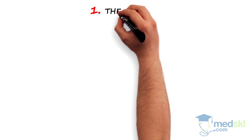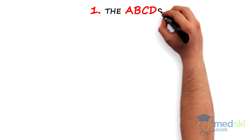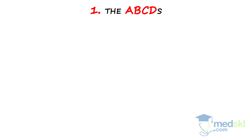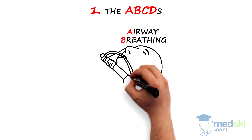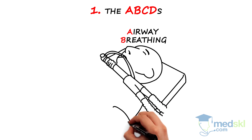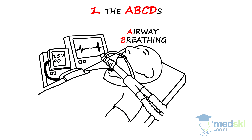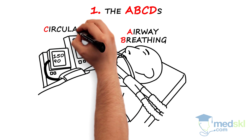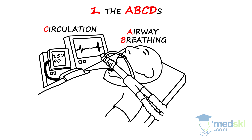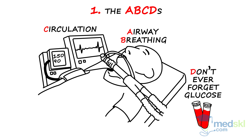Consider the ABCDs. Is the airway secure? A comatose patient may not be able to protect her own airway, and therefore may need to be intubated. High blood pressure and a low heart rate can point to elevated intracranial pressure. Always check the glucose.